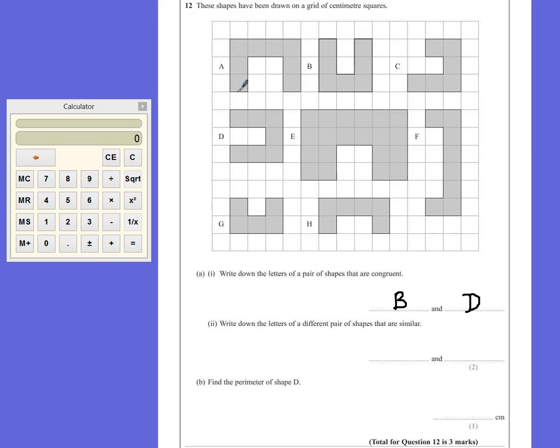The problem being that the gap in the middle there is 2, and the gap in the middle of this one is also 2, so nothing's been enlarged. The two shapes which are the same, but with a little bit of enlargement, would be G and E. Every measurement, every gap has been doubled from G to get to E, so they are both similar.